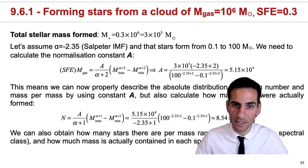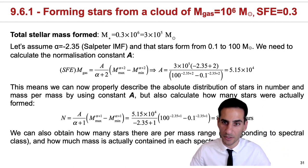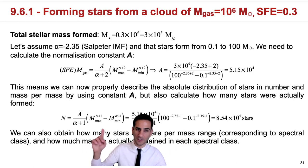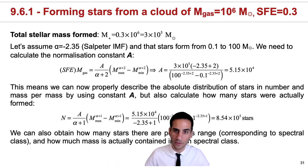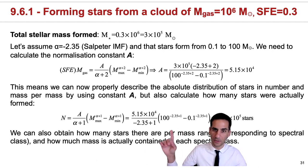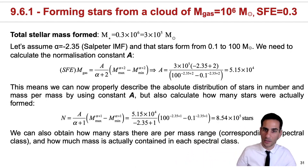This is really helpful because we can use the expression we derived before for the number of stars, integrating from 0.1 solar masses to 100. If we plug in the values, we realize that this cloud, when it transformed into stars with 30% efficiency, formed 8.54×10^5 stars.